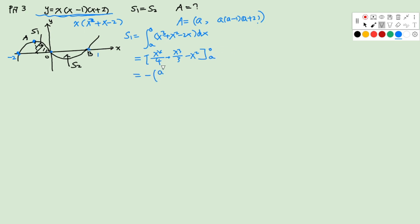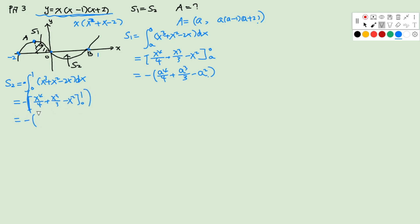For S2, the curve is below the x-axis from 0 to 1, so we use a negative sign. S2 = −∫₀¹ (x³ + x² − 2x) dx = −[x⁴/4 + x³/3 − x²] from 0 to 1 = −(1/4 + 1/3 − 1) = −(−5/12) = 5/12.